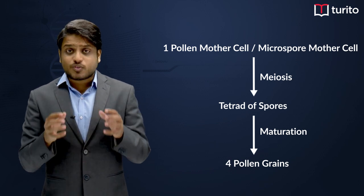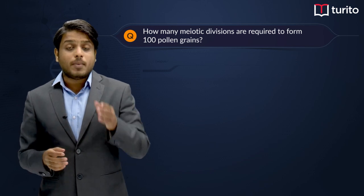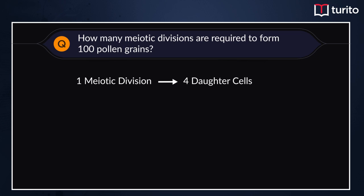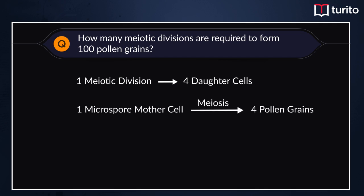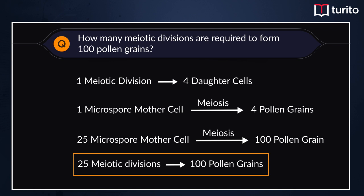Now, for example, if a question asks how many meiotic divisions are required to form 100 pollen grains — one meiotic division of a microspore mother cell gives you four daughter cells, meaning four pollen grains. So for 100 pollen grains to form, we need 25 meiotic divisions. This is how the microsporogenesis concept is applied in numerical questions.